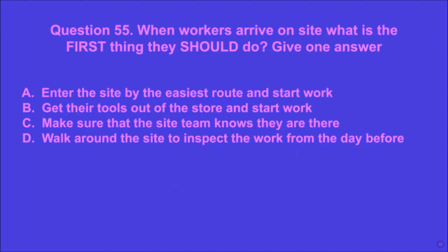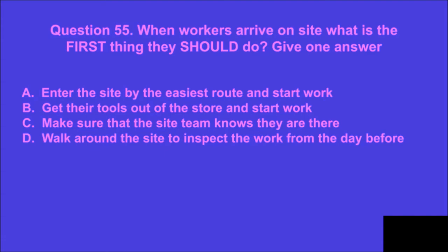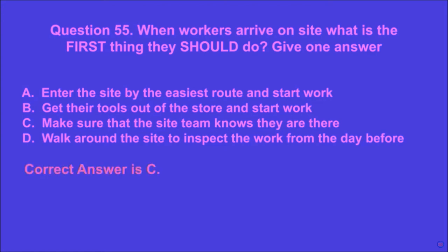Question 55: When workers arrive on site, what is the first thing they should do? Give one answer. A: enter the site by the easiest route and start work, B: get their tools out of the store and start work, C: make sure that the site team knows they are there, D: walk around the site to inspect the work from the day before. C is the correct answer.